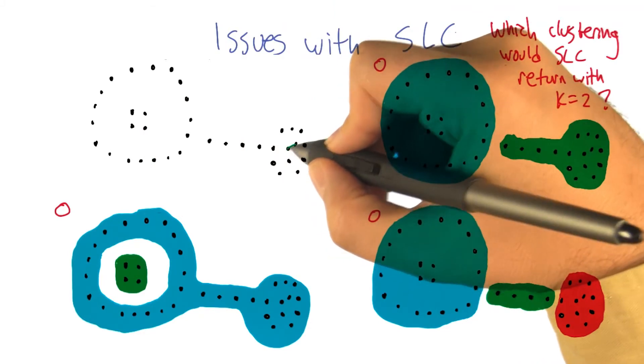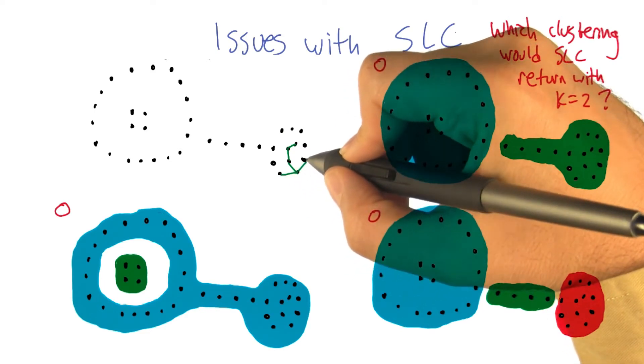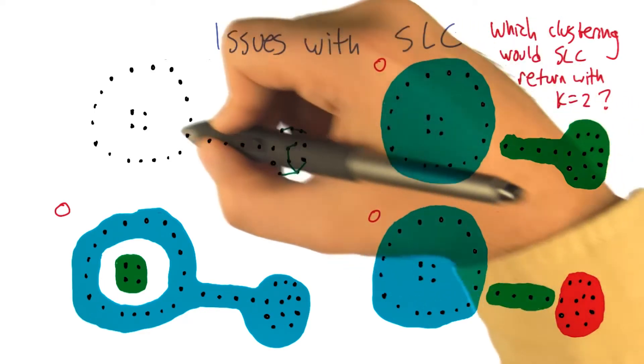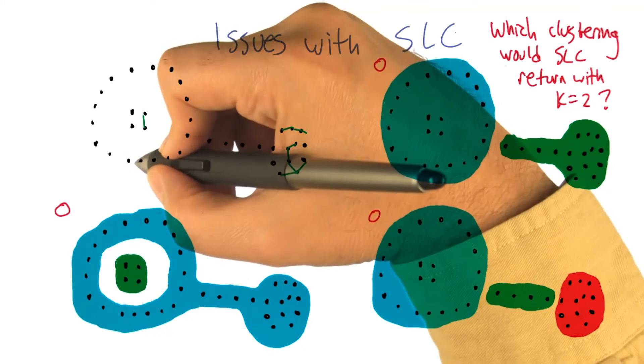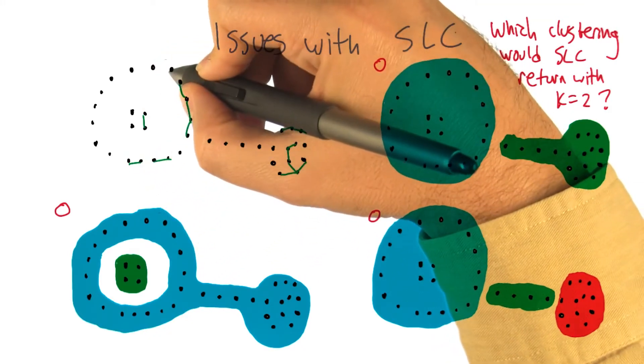If we start doing mergers, it ought to look something like this, right? Where we've got, I don't know, maybe, but little by little, it's going to be linking these things up.